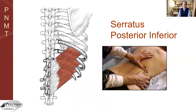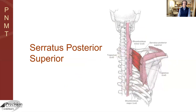Another muscle attached to the ribs that plays a role in rotation is the serratus posterior inferior. You can see how this is a bit of a twin to the internal oblique, in that it will also rotate you to the same side. Above that we have the serratus posterior superior, which attaches here. You can't see its attachments on the ribs because they're actually under the scapula.